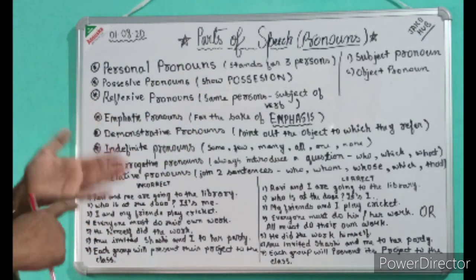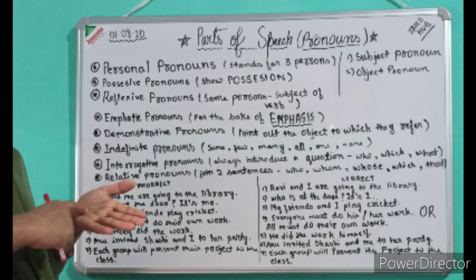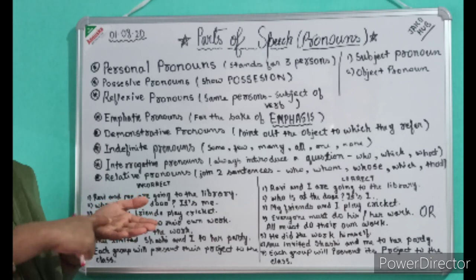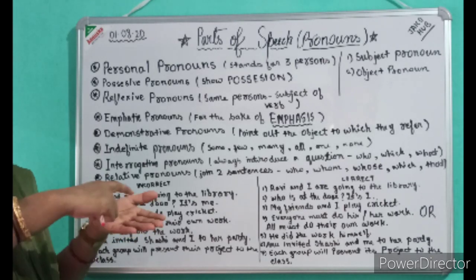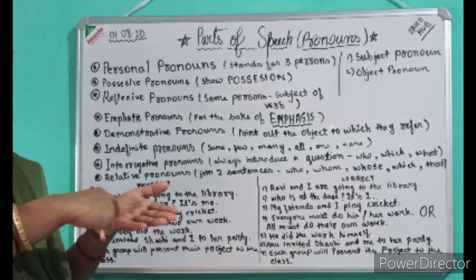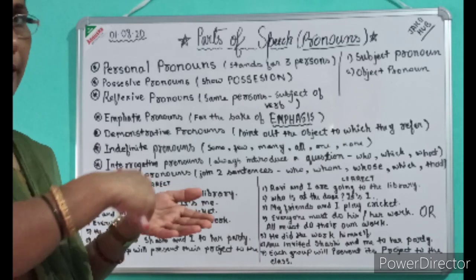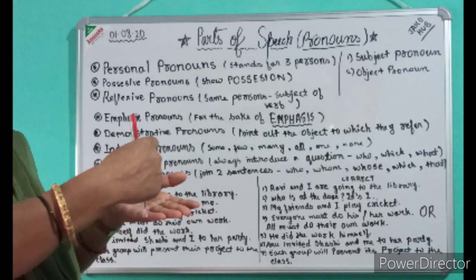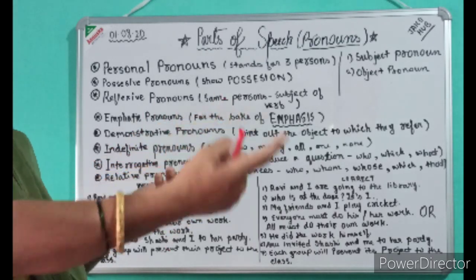Personal pronouns stand for the three persons. First person: 'I' singular and 'we' for plural. Second person: 'you'. Third person: 'he', 'she', 'it', and 'they'.